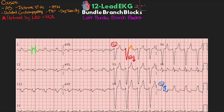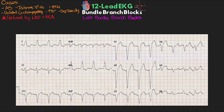In this second left bundle branch block example, the QRS is clearly greater than 0.12 seconds. Switching to V1, we see that deep wide negative terminal deflection — the turn signal method tells us we're turning left, thus left bundle branch block morphology. We again see positive J point shifting and positive T wave discordance, opposite of that terminal negative deflection. Looking at V6, it's not very clear, so we evaluate lateral leads 1 and AVL — things are a little clearer, particularly with AVL, showing a positive terminal wave opposite of V1 with negatively shifted J point and negative T wave discordance.